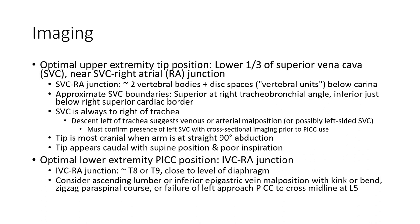Imaging: Optimal upper extremity position. The tip should course through the superior vena cava, near the SVC-right atrium junction, also known as the SVC-RA junction, at the vertebral body level. The appropriate SVC boundary is superior at the right tracheobronchial angle, and inferior just below the right upper cardiac border.